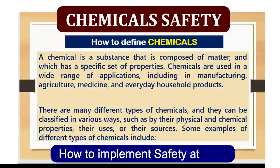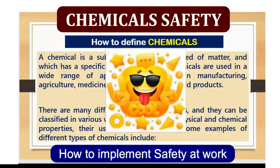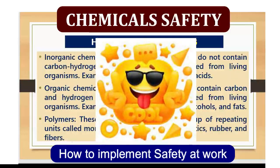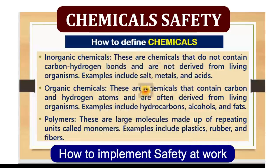Some examples of different types of chemicals include: Number 1, inorganic chemicals. These are chemicals that don't contain carbon-hydrogen bonds and are not derived from living organisms. Examples include salt, metals, and acids.